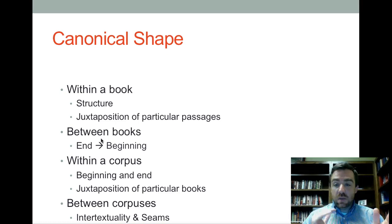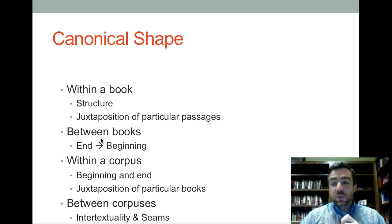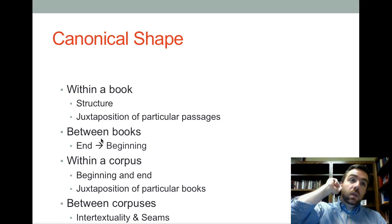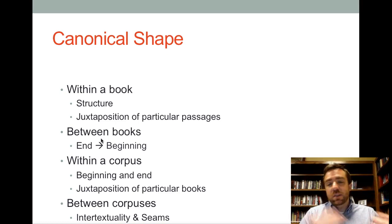If you're looking between books, the end of one book and the beginning of another is important. For instance, in the Minor Prophets, Hosea ends with the salvation of the nations and the restoration of grain, oil, and wine — and then in Joel, those things are judged in Israel. You have the end of Amos where the nation of Edom is saved, and then in Obadiah the nation of Edom is judged. Why are the ends of these books linked to the beginning of the next book?